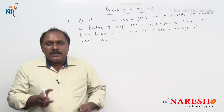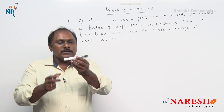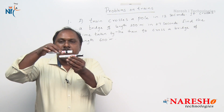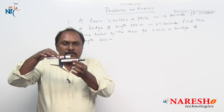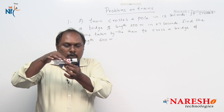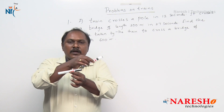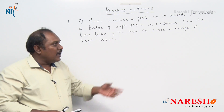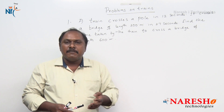The second point: if the same train has to cross a bridge, what is the distance it has to travel? To cross a bridge, the train has to travel a distance equal to the length of the bridge plus the length of the train. These are the two basic points which we require to answer this question without any formula or equations in a very simple way.